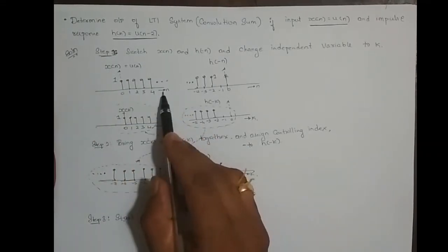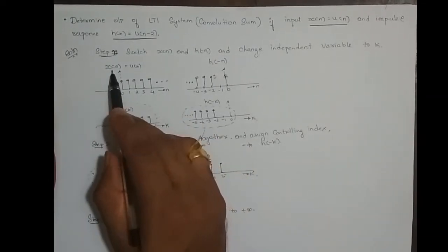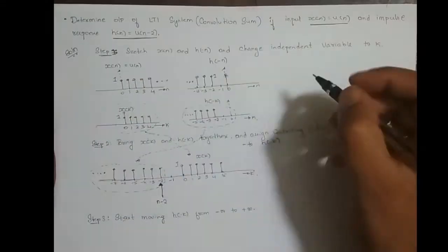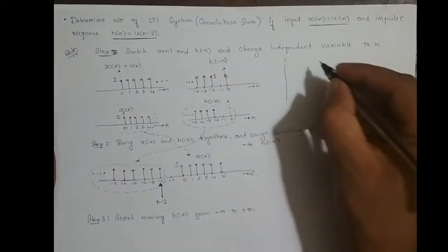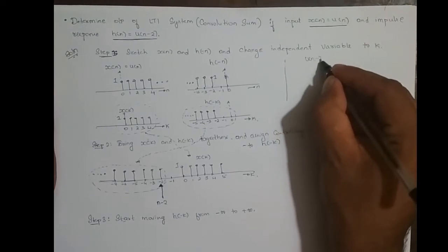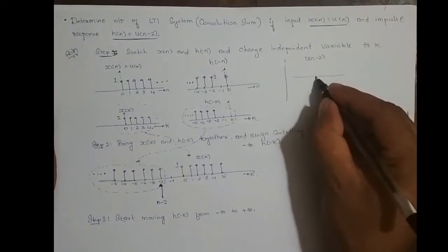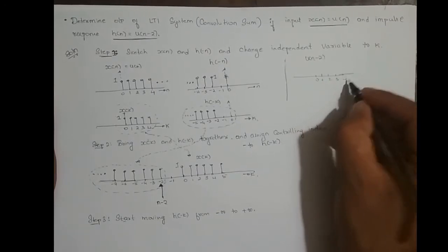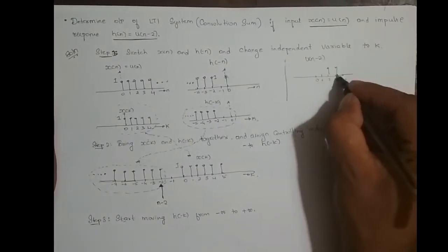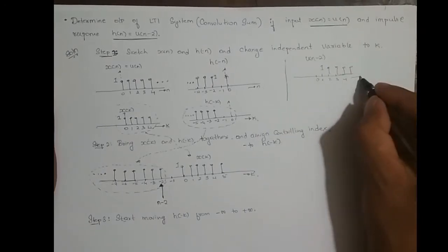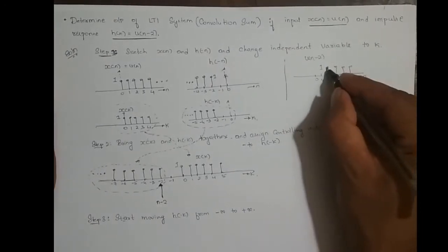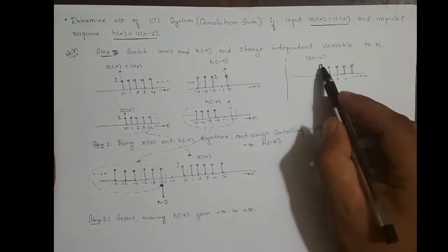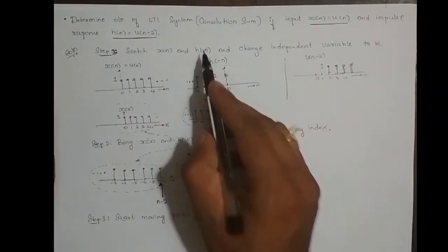Now, what is h(n)? h(n) is u(n-2). How does u(n-2) look? u(n-2) is the unit step function shifted right two times — it starts from n equal to 2 and its amplitude is 1. This is how the unit step function looks when shifted right two times.